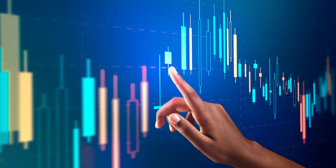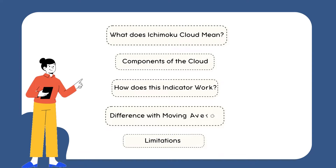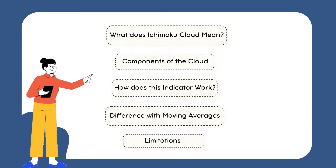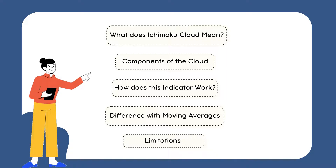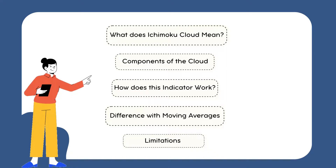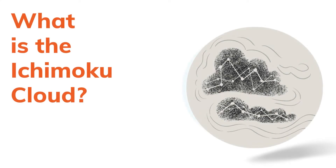In this part of the video, we will be talking about the Ichimoku Cloud: its meaning, the components of this cloud, how this indicator works, what it tells you, its difference with moving averages, and finally its limitations. So without losing any time, let's start with the introduction. What is Ichimoku Cloud?